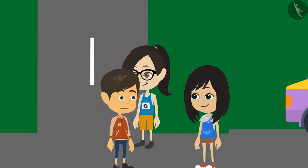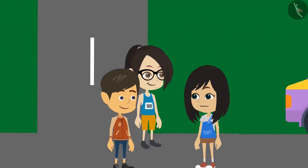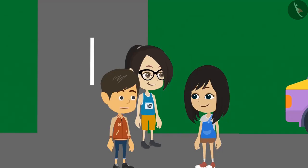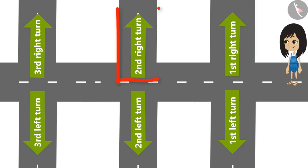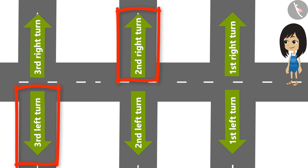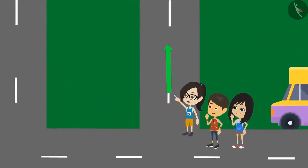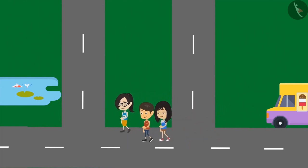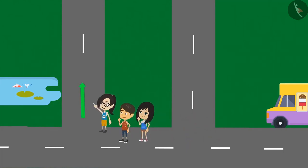Okay, please tell me. See, if we say second turn, it means we have to leave the first turn and take the second. Similarly, if we say second right turn, then we have to leave the first right turn and take the second right turn. Then you should say 'leave first right and take second right.' Yes, we can say that, but Ayushman, it is too long. Therefore, we simply say 'take second right turn,' 'third left turn,' etc. Look, this is the first right turn — we will not turn here. We will go straight and turn on the next right.